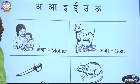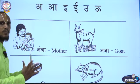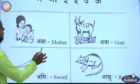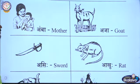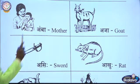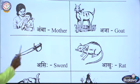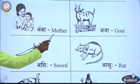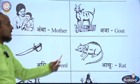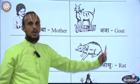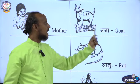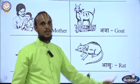Now I will show you some example words for these letters. Listen here. Amba — mother. Amba — mother. Aja — goat. Aja — goat.